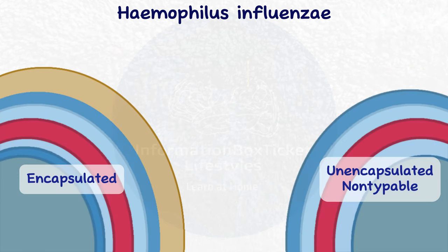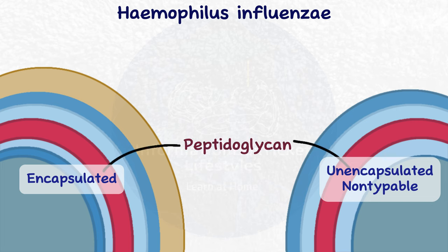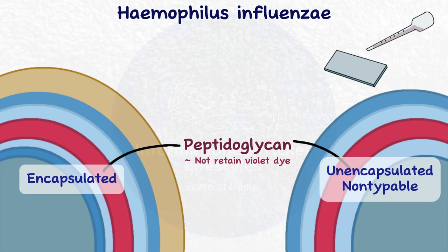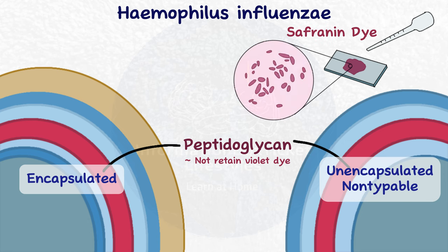Haemophilus influenzae has a thin peptidoglycan layer, so it doesn't retain the crystal violet dye during gram staining. Instead, like all other gram-negative bacteria, it stains pink with safranin dye. And because it's a coccobacillus, its form varies between spherical, like a coccus, and linear, like a bacillus.